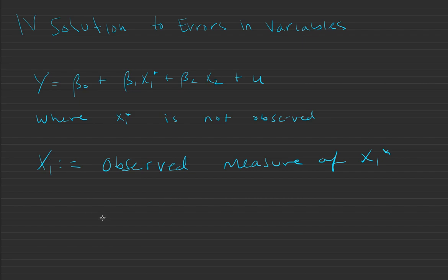And x1 is measured with error such that x1 equals x1 star plus e1, where e1 is the measurement error.